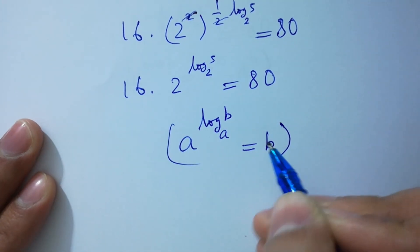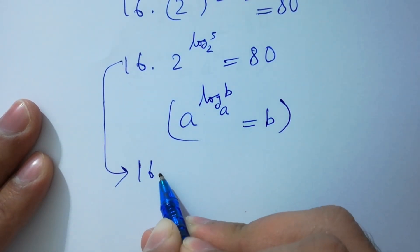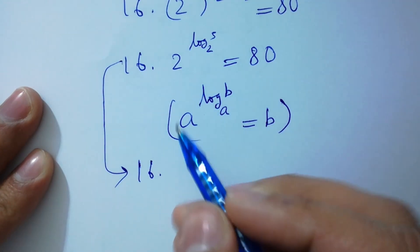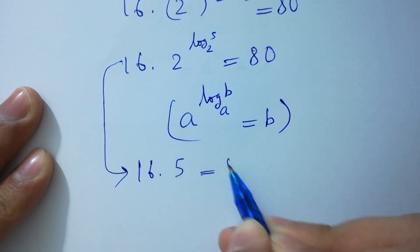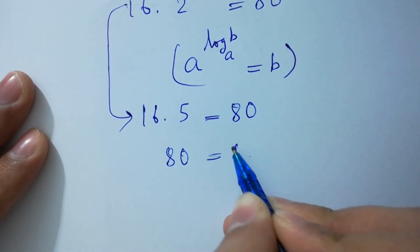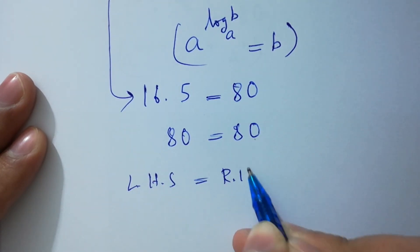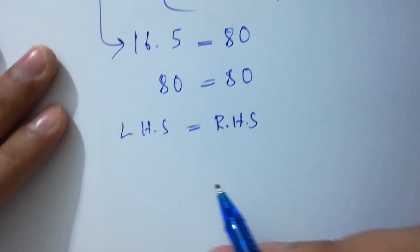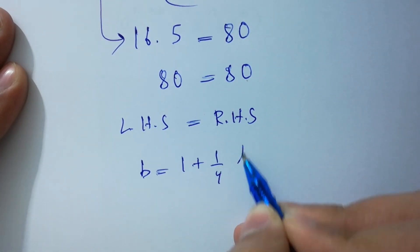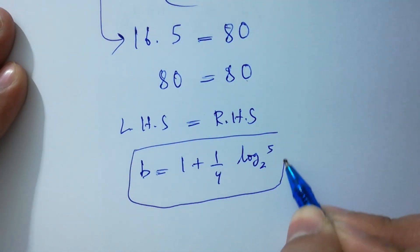It will be equal to 16 times 2 to the power log 5 to the base 2, which equals 5, so 16 times 5 equals 80. Left hand side equals right hand side, which shows that the value of B equals 1 plus 1 over 2 log 5 to the base 4, which satisfies the equation.